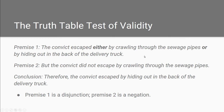Let's take this one step further and consider the truth table test of validity. 'The convict escaped either by crawling through the sewage pipes or by hiding out in the back of the delivery truck. But the convict did not escape by crawling through the sewage pipes. Therefore the convict escaped by hiding out in the back of the delivery truck.' Let's restate this in standard form with premise one, premise two, and the conclusion. Premise one is a disjunction and premise two is a negation.